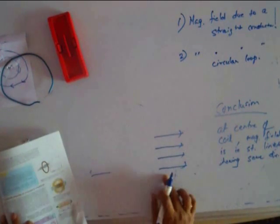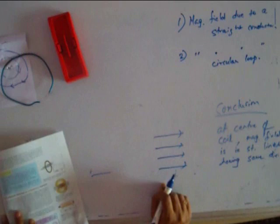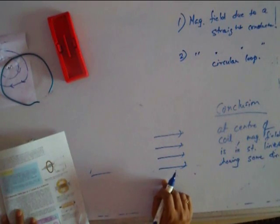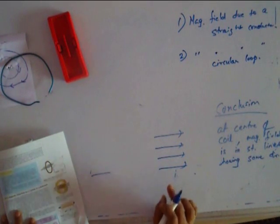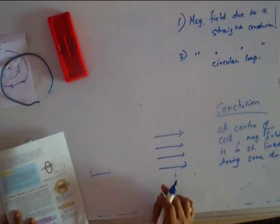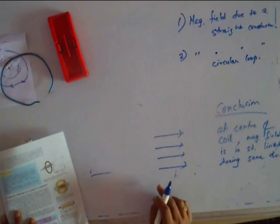You have strong magnetic field at the centre and you have a uniform magnetic field at the centre. Why is that so? Because each part of the loop produces the magnetic field in the same direction, therefore, magnetic field gets added up.